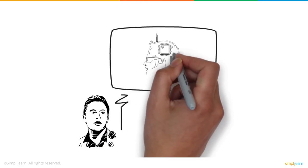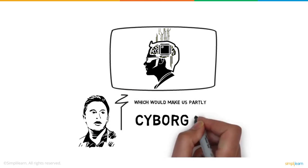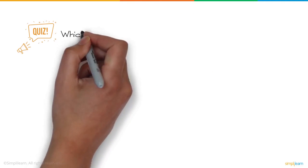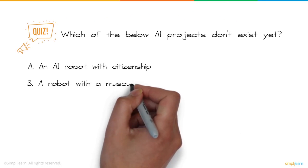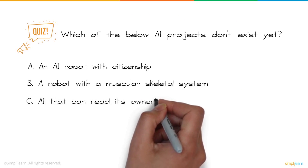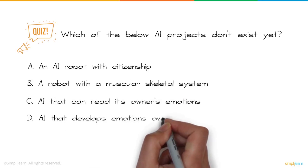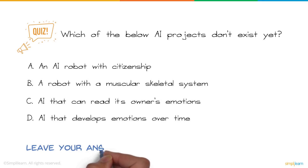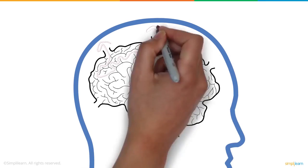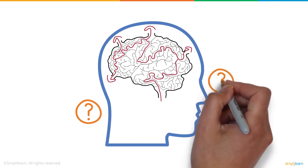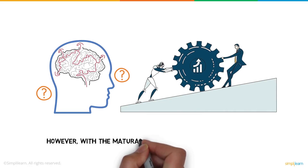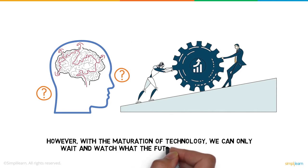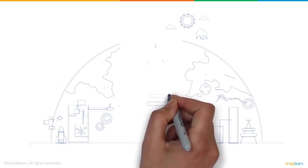Elon Musk predicts that the human mind and body will be enhanced by AI implants, which would make us partly cyborgs. Here's a question: which of the following AI projects don't exist yet? A) An AI robot with citizenship, B) A robot with a muscular skeletal system, C) AI that can read its owner's emotions, D) AI that develops emotions over time. Leave your answers in the comments. Since the human brain is still a mystery, AI too has many unventured domains. For now, AI is built to work with humans and make our tasks easier. That is artificial intelligence in short.